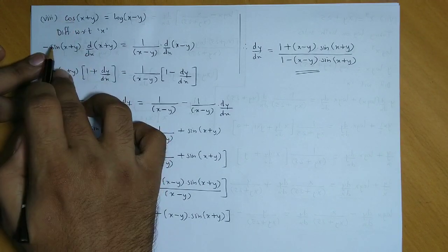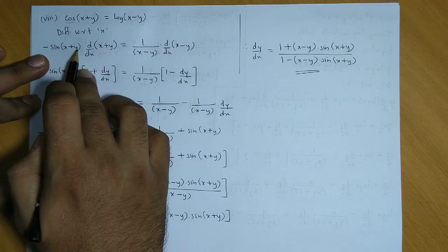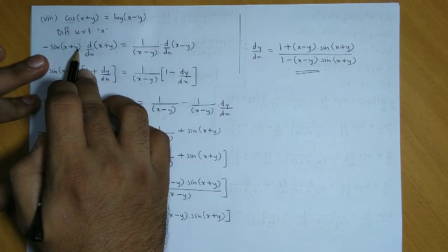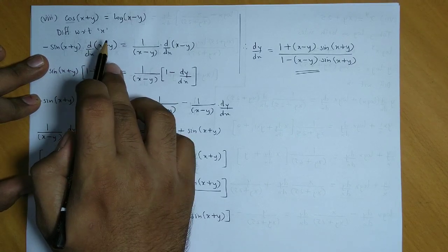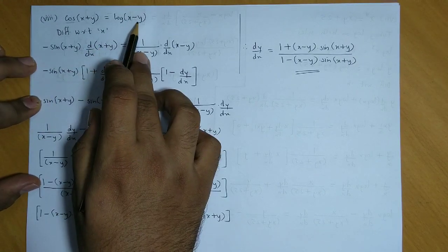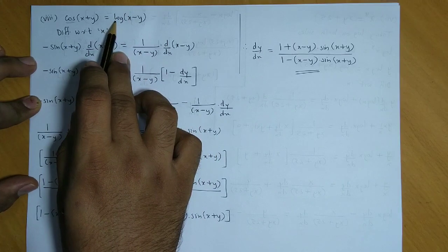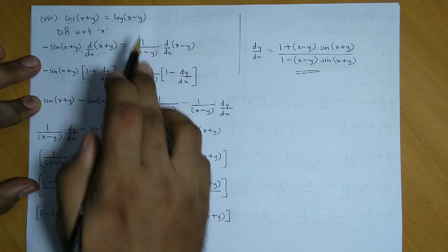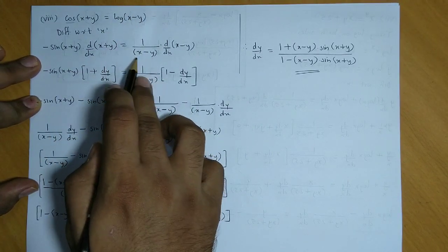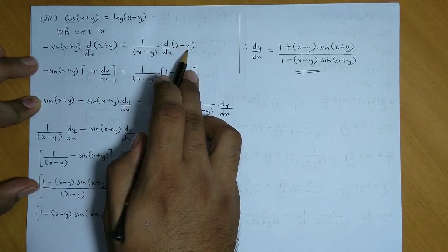And using chain rule, we get derivative of x plus y. Same thing on the right hand side, chain rule will apply. So first log term's derivative, log of x minus y is 1 upon x minus y, into derivative of x minus y.